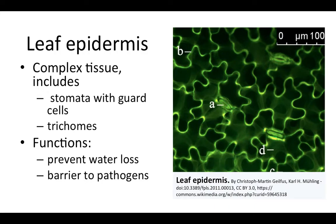The leaf epidermis is a complex tissue. We've talked about epidermis tissue before in the context of tissues. Remember that as a complex tissue it includes different cell types. Here it's going to include stomata — stomata themselves aren't cell types, but the guard cells that surround each opening are a particular kind of cell.